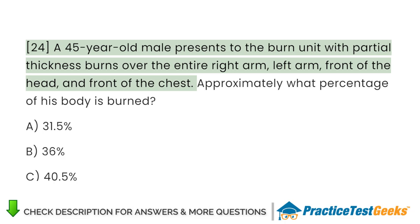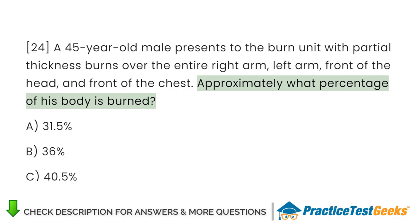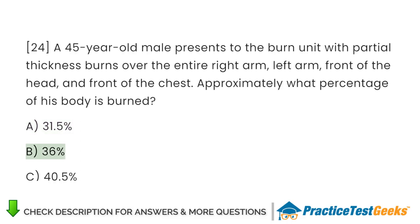A 45-year-old male presents to the burn unit with partial thickness burns over the entire right arm, left arm, front of the head, and front of the chest. Approximately what percentage of his body is burned? A. 31.5%. B. 36%. C. 40.5%.